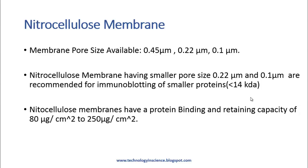First, let us look at nitrocellulose membranes. Nitrocellulose membranes are available in pore sizes of 0.45 micron, 0.22 micron, and 0.1 micron. Smaller pore sizes of 0.22 and 0.1 are recommended for immunoblotting of smaller proteins, that is less than 14 kilodaltons. Nitrocellulose membranes have a protein binding and retaining capacity of 80 to 250 microgram per centimeter square.